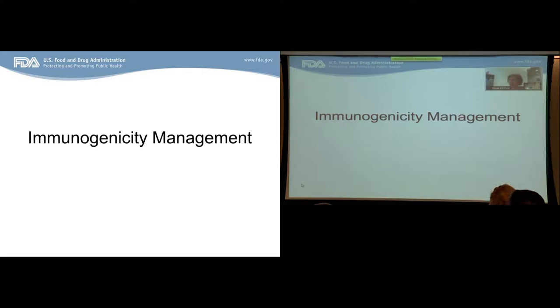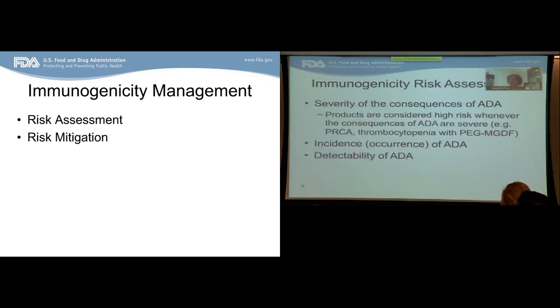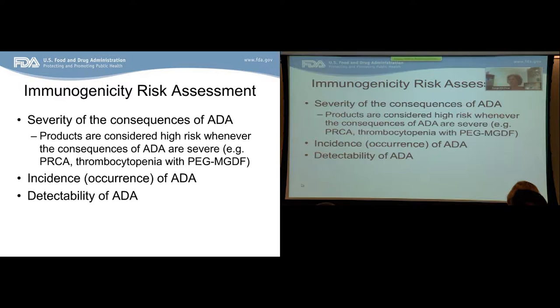Because of the potential impact of anti-drug antibodies, the FDA requests that all sponsors manage the immunogenicity of their therapeutic protein. Immunogenicity management has at least two components: risk assessment and risk mitigation. When assessing the risk of immunogenicity, the first thing we consider is the severity of consequences of anti-drug antibodies. Any product where the consequences could be severe is considered high risk, even if the likelihood or incidence is extremely low.